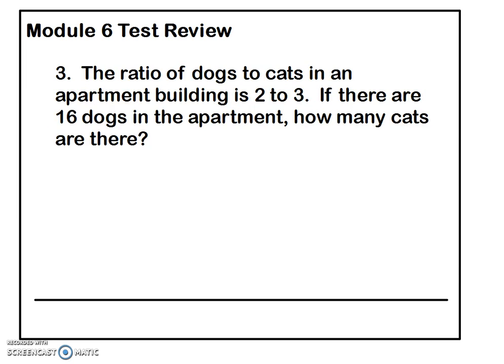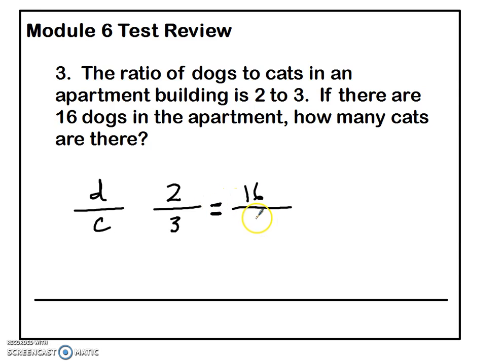Number three: the ratio of dogs to cats in an apartment building is two to three. If there are 16 dogs in the apartment, how many cats are there? Once again, I'm going to set this up like I did number one. The ratio is from dogs to cats — two dogs for every three cats. The question reads if there are 16 dogs, so that's going to be the top term. And I don't know the number of cats, so I put a question mark there.